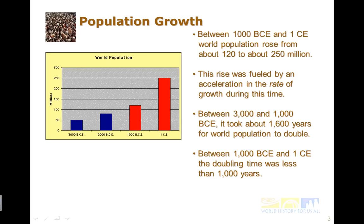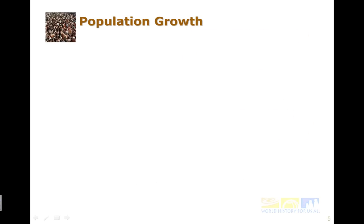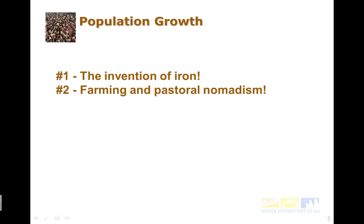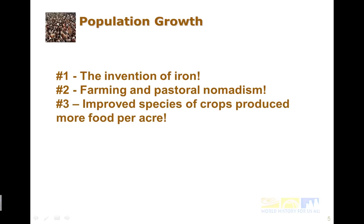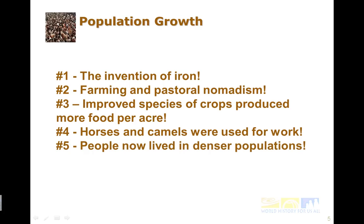The world population doubled much faster, and let's look at some of the reasons that population growth really accelerated. The invention of iron was a big cause. Farming and pastoral nomadism continued to grow. There were improved species of crops that produced more food per acre than ever before. Horses and camels started to be used for work, and people lived in denser populations. We'll look more in this era at each of those details.